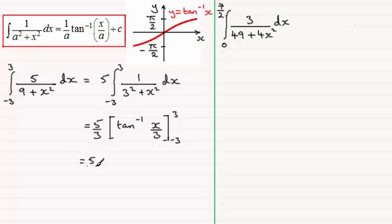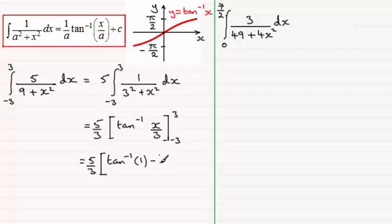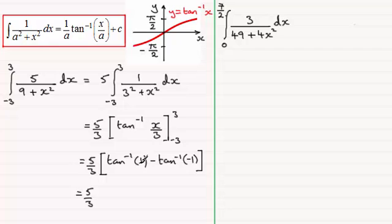We've got the 5 thirds at the front, multiplied by the inverse tan of — putting 3 in — we get 3 over 3, so that's the inverse tan of 1. Then we subtract the inverse tan of what we get when we put minus 3 in: minus 3 over 3 is minus 1, so the inverse tan of minus 1. When taking the inverse tan of 1, making sure we're in the correct range, using a calculator you get pi upon 4.